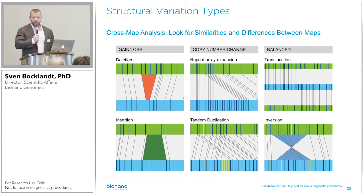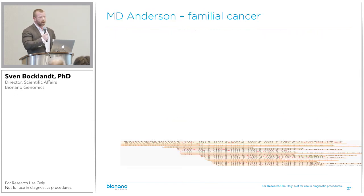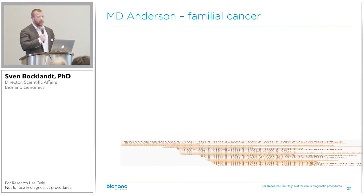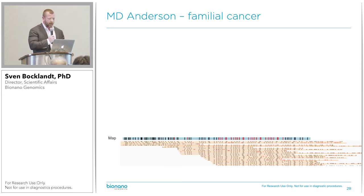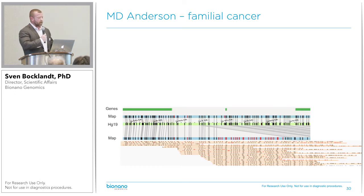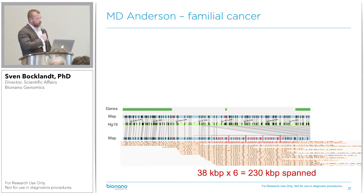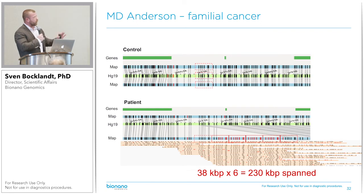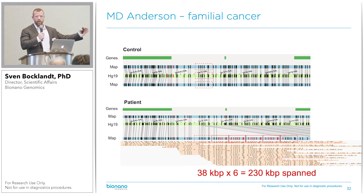I'll walk you through one example. Here's a case from MD Anderson where four children in the same family had an extremely rare tumor — a one-in-a-million type of occurrence. Looking at a small part of the genome, we built a consensus genome map representing the average spacing of labels, and when we compared it to HG19, the left aligned nicely but on the right something was going on. What we're seeing is a 38 KB fragment in six tandem duplications in the patients and not in the controls.